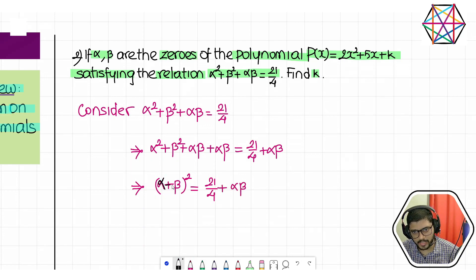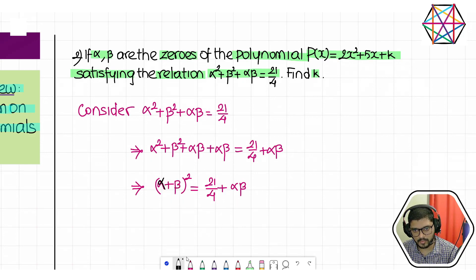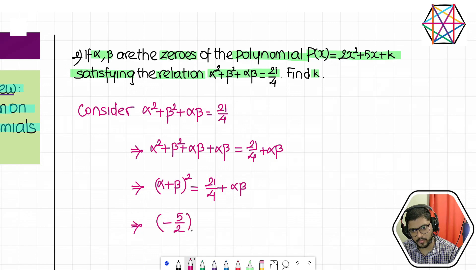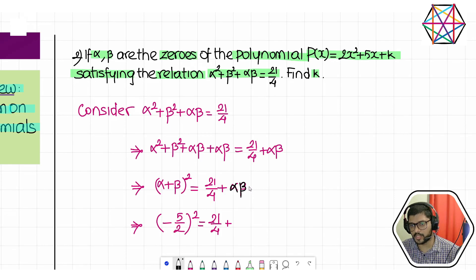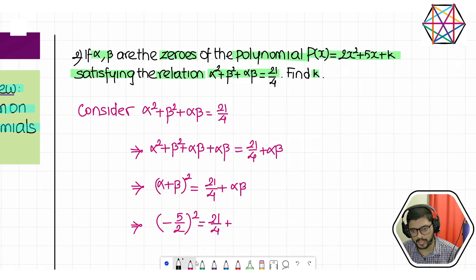The LHS, (α + β)², is the square of the sum of zeros, which equals (−b/a)² = (−5/2)² = 25/4. The αβ on the RHS is the product of the zeros, which equals c/a = k/2. So we have 25/4 = 21/4 + k/2.